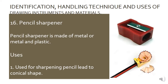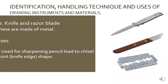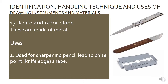Pencil sharpener is made of metal or metal and plastic. Use: Pencil sharpener is used for sharpening pencil lead to a conical shape. Knife and razor blade are made of metal. Use: Knife or razor blade is used for sharpening pencil lead to a chisel point shape or knife edge shape.